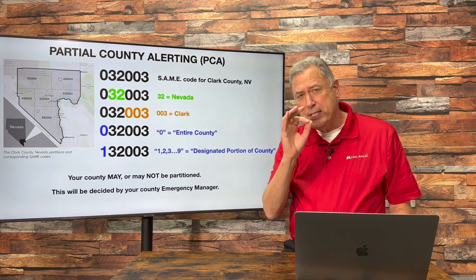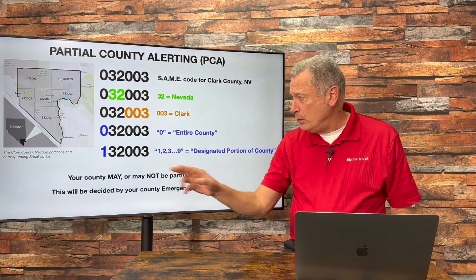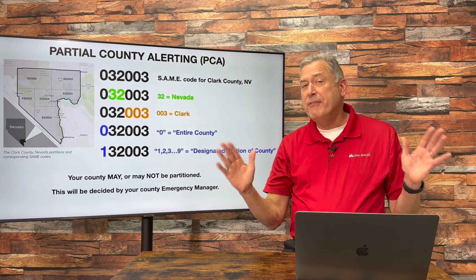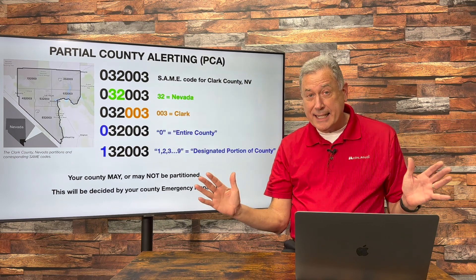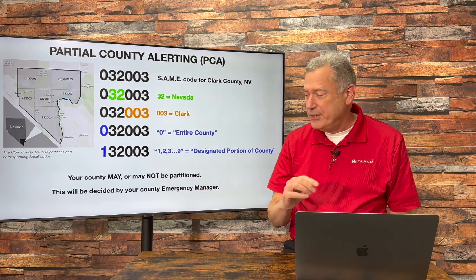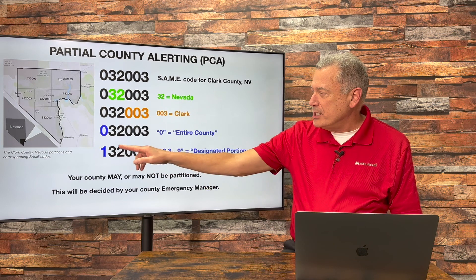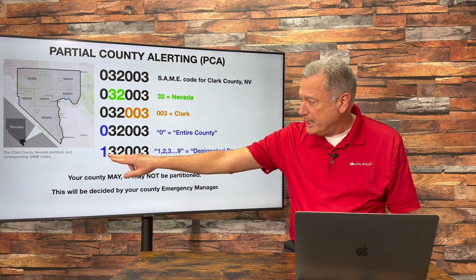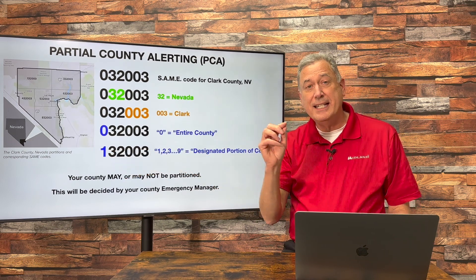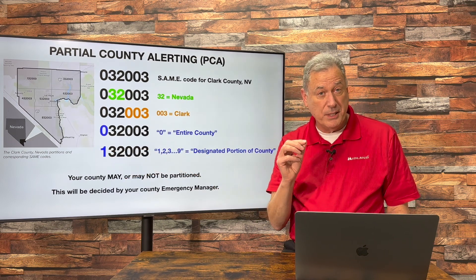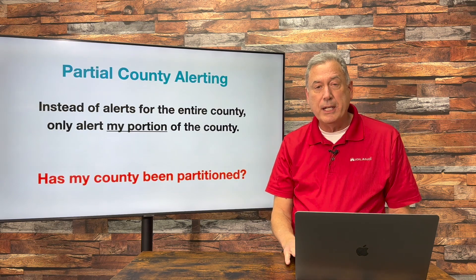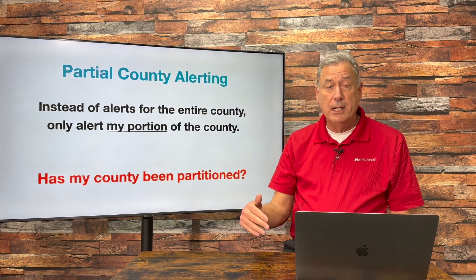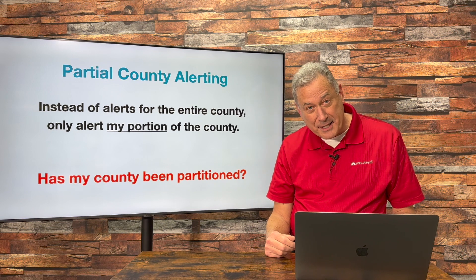The first digit of these codes has always been a zero, which means warn me for everything in my county, but you don't have to have it that way. Some counties can be partitioned, and you can place a different digit in that first position, and now you've told your weather radio, I only want to be alerted for a certain section of this county.